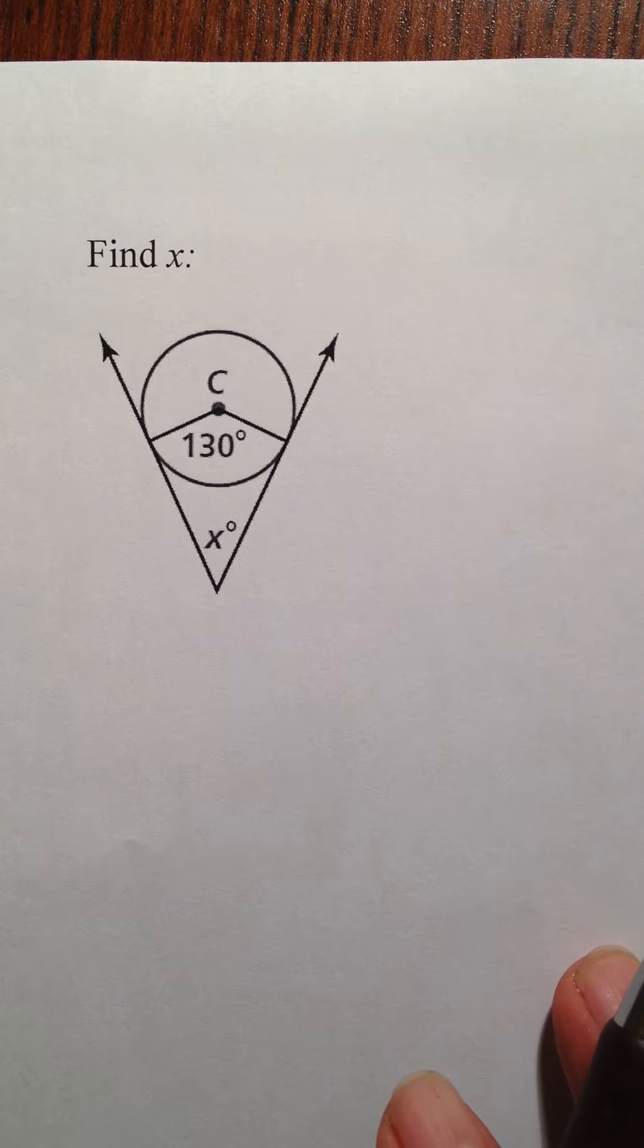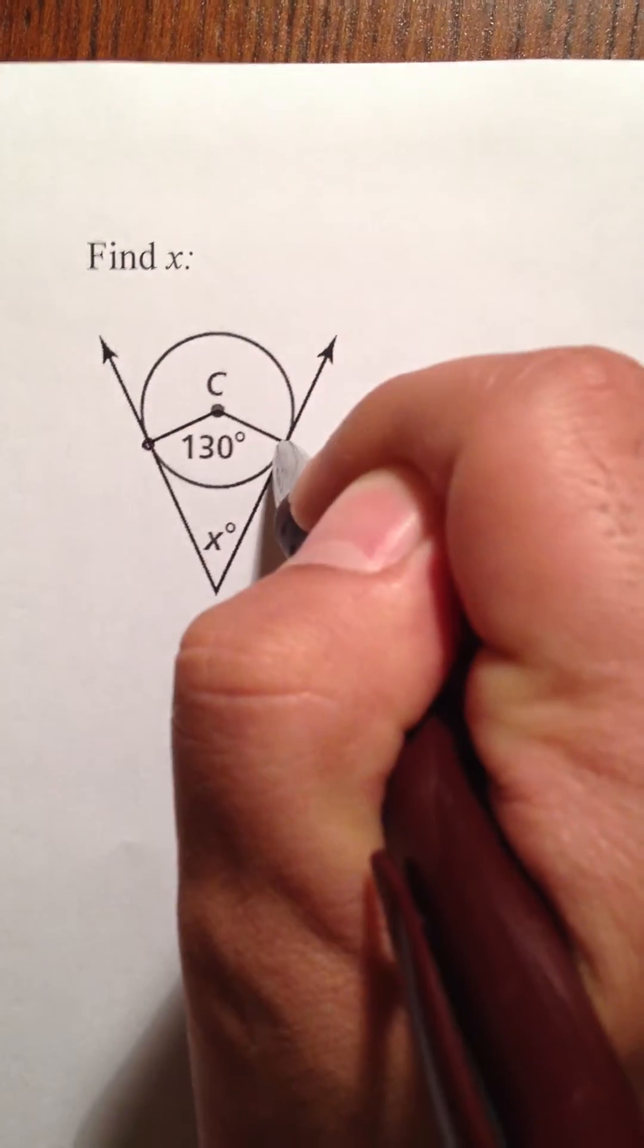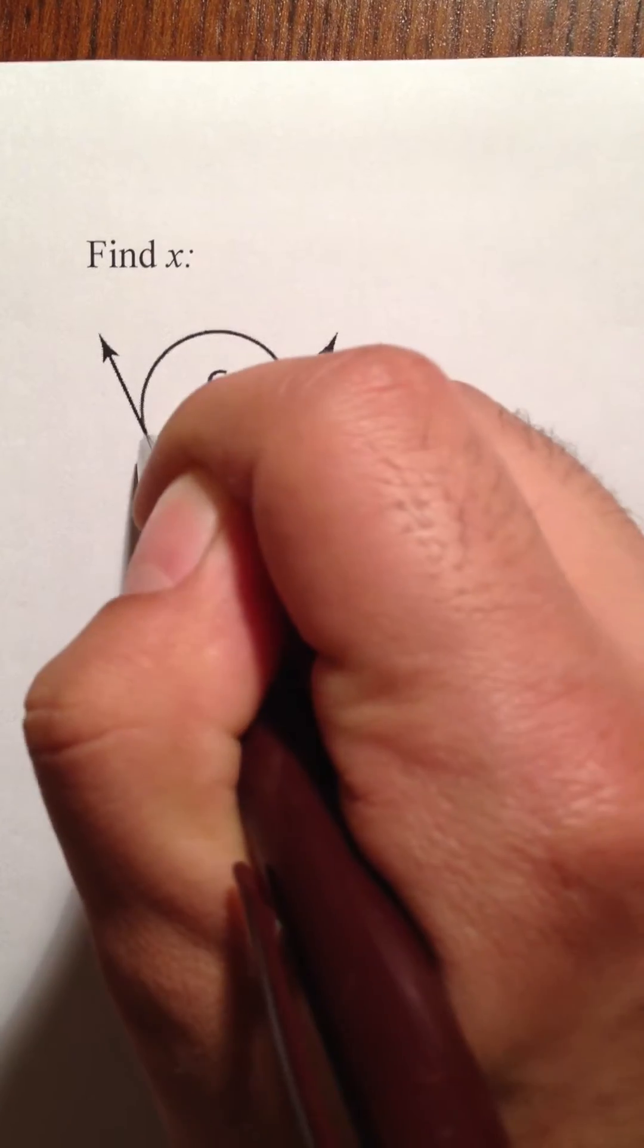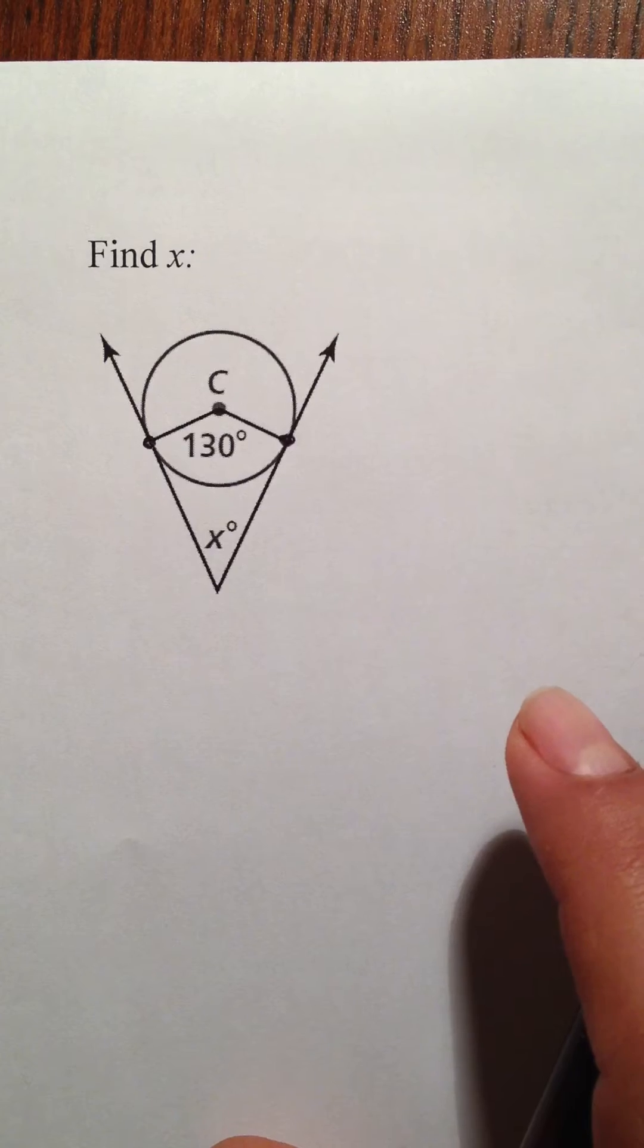One of the more difficult problems for finding exterior angles outside of a circle is when you have two tangent points. There are certain rules that apply to tangent points in circles, so I can actually describe two ways of solving this.